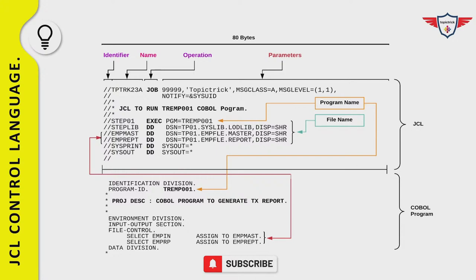After STEPLIB, you have DD statements for EMPMAST (employee master file) and EMPREPT (employee report) — one is an input file and the other is an output file. These file names are used directly in the COBOL program. In the file control section of the COBOL program, the file EMP-IN is mapped to EMPMAST in the JCL. Additionally, SYSPRINT and SYSOUT are DD statements used to specify where job-related messages will be printed.